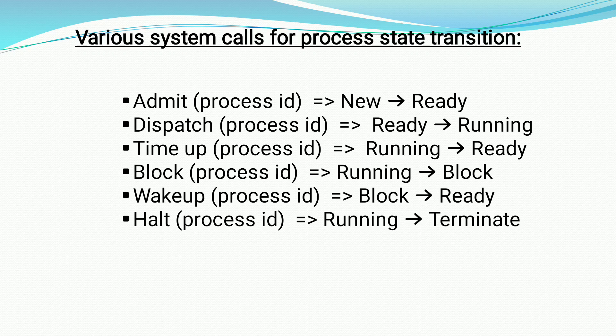The three most important states are ready state, running state, and blocked state. Ready state means the process does not involve any IO operation and is waiting only for CPU scheduling — it moves from the ready state to the running state. Running state means the process is scheduled by the CPU scheduler. Blocked state means the process is involved in an IO operation. I hope you understood very well. Thank you.